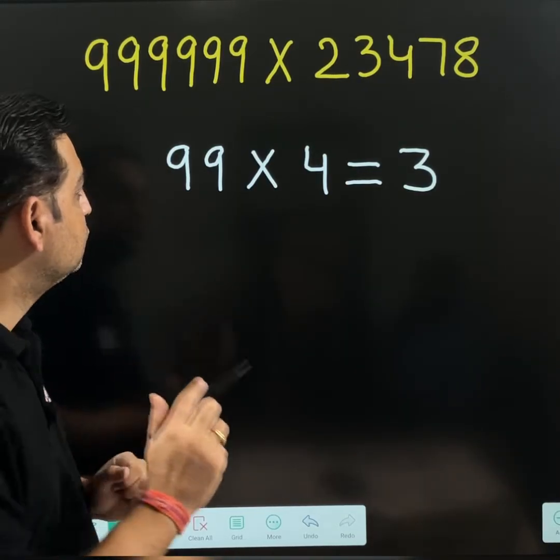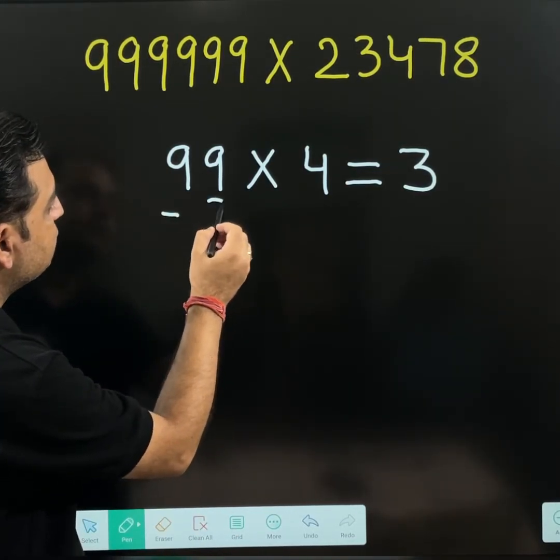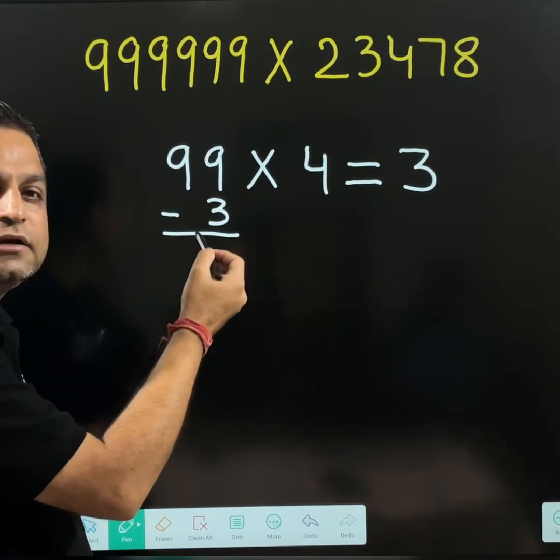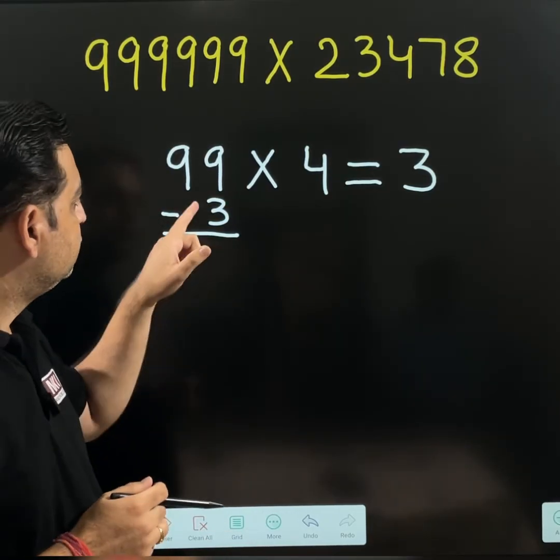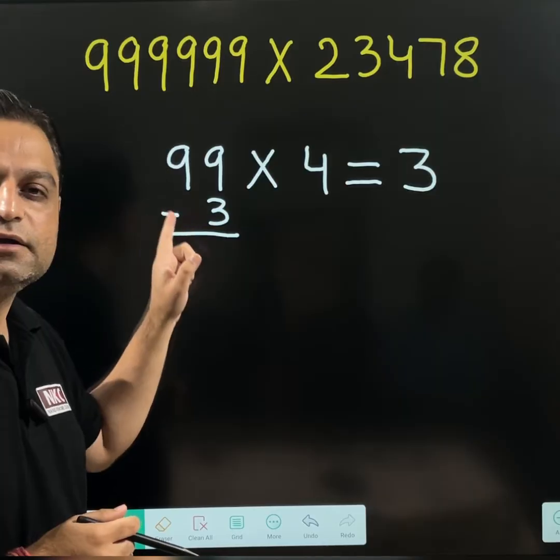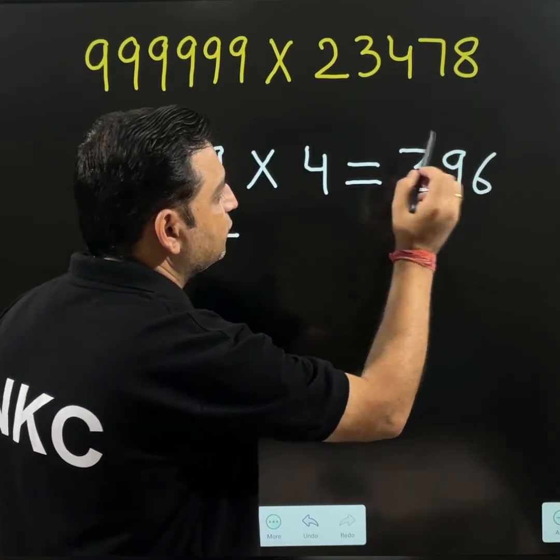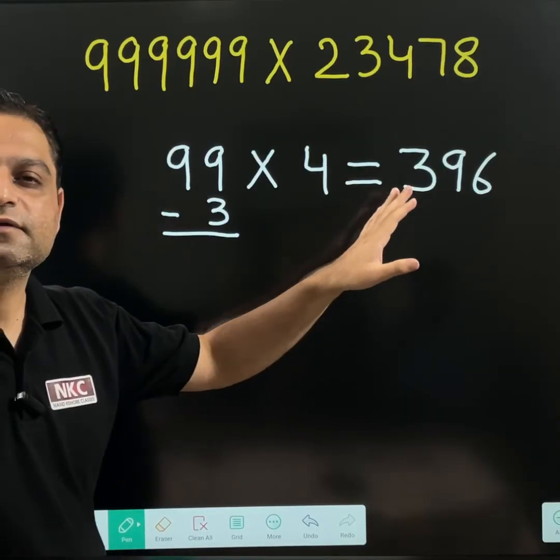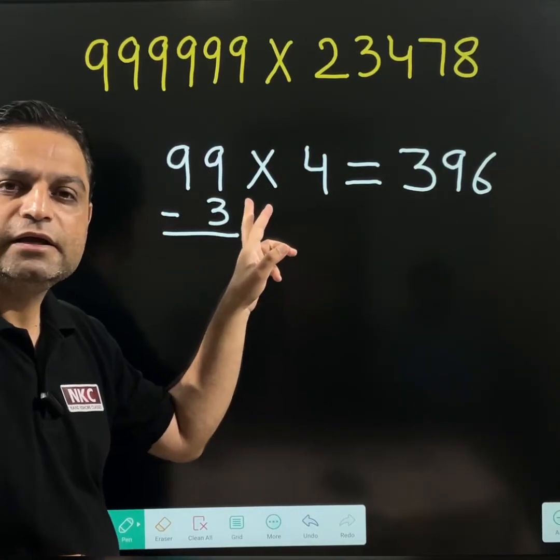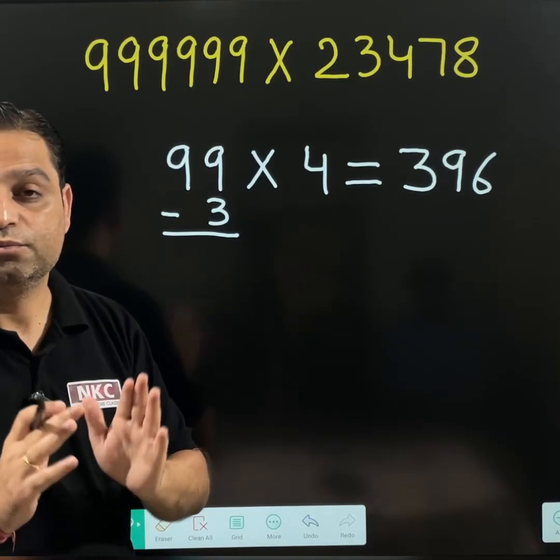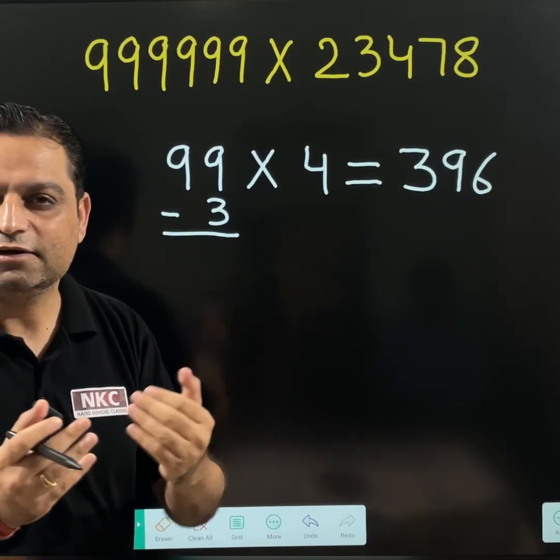Now what to do? Just subtract this 3 from 99. If you subtract 3 from 99, you get 96. So just write 96 here. 396 is the answer for multiplying 99 with 4. I hope you are able to understand. It is not difficult.